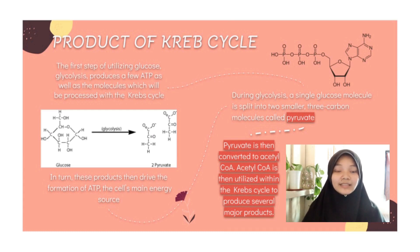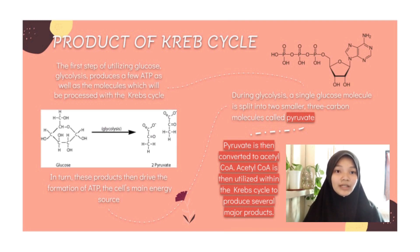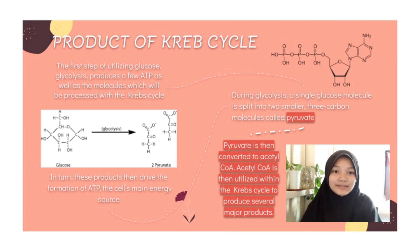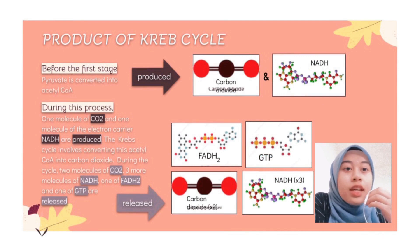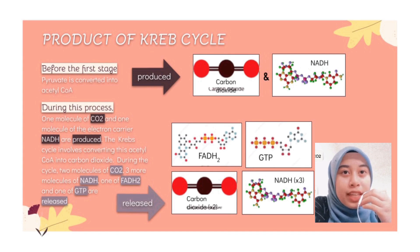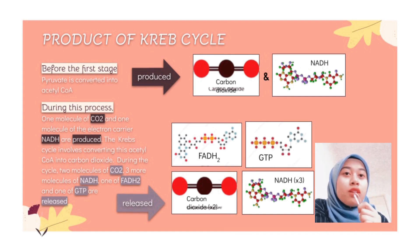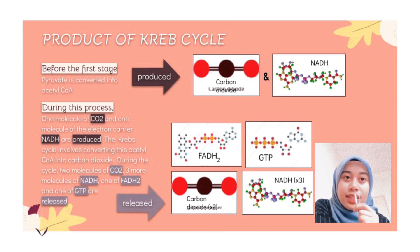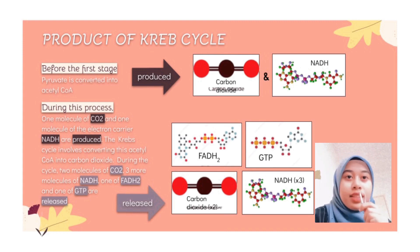During glycolysis, a single glucose molecule is split into two smaller three-carbon molecules called pyruvate. Pyruvate is then converted into acetyl-CoA, which is utilized within the Krebs cycle to produce several major products. These products drive the formation of ATP — the main energy source for cells. For every one pyruvate molecule entering, the Krebs cycle produces two molecules of CO2, three molecules of NADH, one molecule of FADH2, and one molecule of GTP. Since a glucose molecule contains two pyruvates, one glucose molecule produces double those amounts. These products are then converted to ATP in later stages of aerobic respiration.